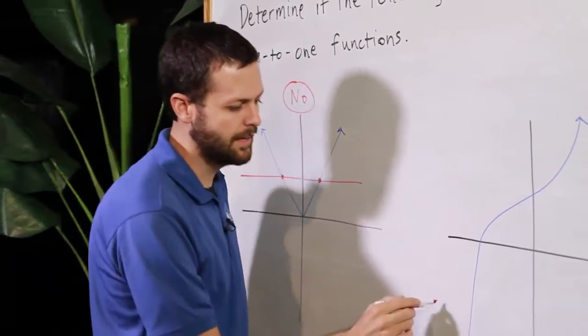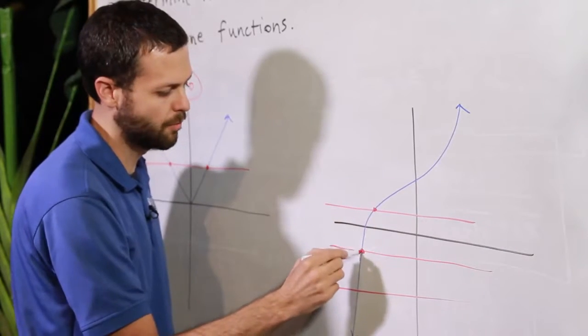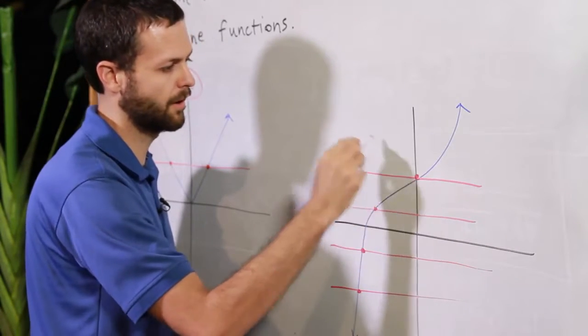Notice that in any case here, any horizontal line I draw crosses at most one point. Doesn't matter where I draw it.